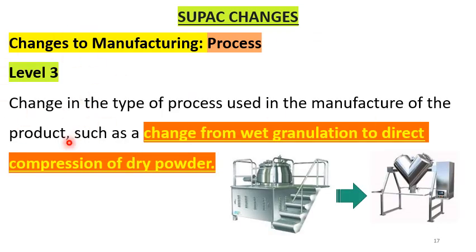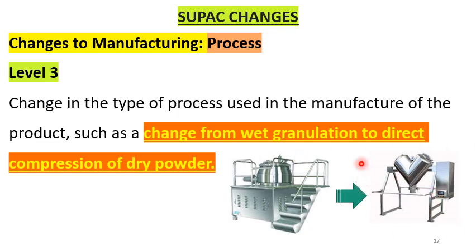Level 3 process changes involve a change in the type of process used to manufacture the product, such as a change from wet granulation to direct compression, or from top-spray granulation to RMG granulation. The impact of the manufacturing process change is much greater at level 3. Such changes may be made for lifecycle management or cost reduction reasons.